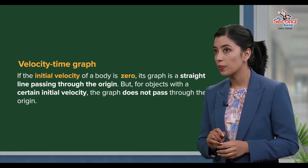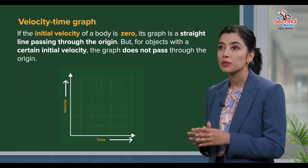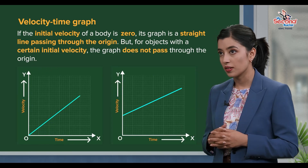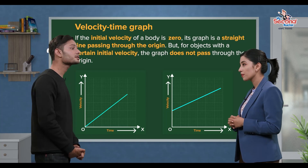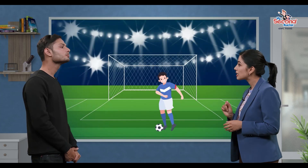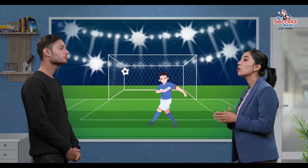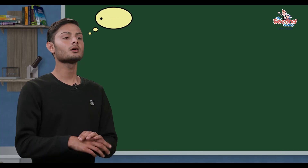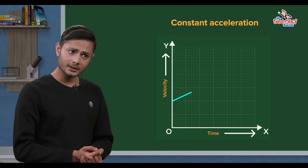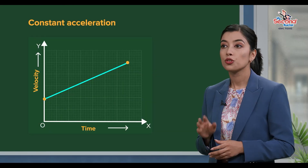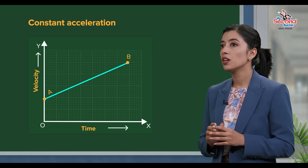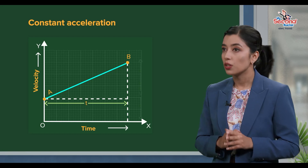For objects whose initial velocity is zero, the velocity-time graph starts at the origin. For example, if you want to play football, the initial velocity is zero. Now let's label this velocity-time graph. The horizontal axis is time and the vertical axis is velocity.